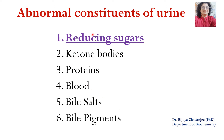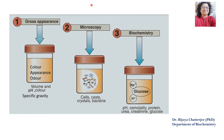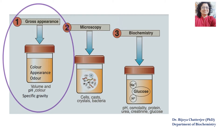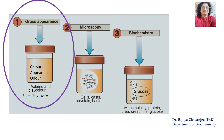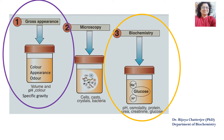Today we will discuss the presence of reducing sugars in urine. When examining urine, we first look at the gross appearance, which includes color, odor, and transparency. Microscopic examination may be done for cells, casts, crystals, and bacteria, and biochemical examinations are done to find out the abnormal constituents of urine. We will briefly discuss gross appearance and the tests done to find out glycosuria in a urine sample.